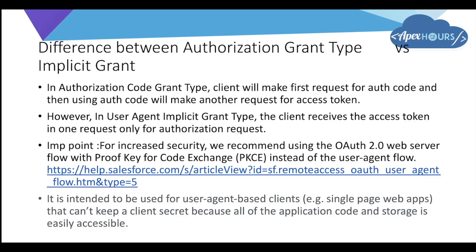The difference between authorization code grant type and implicit grant type: in authorization code grant type, the client makes a first request to obtain an authorization code, then makes another request using that code to get the access token — two requests total. However, in user agent implicit grant type, the client receives the access token in just one request, with no concept of an authorization code.